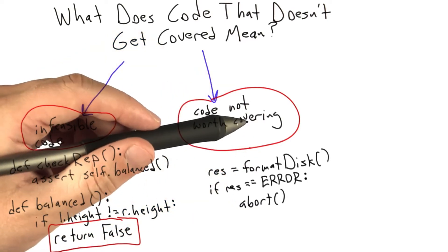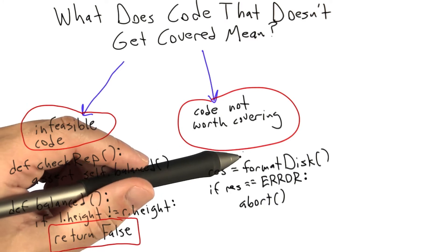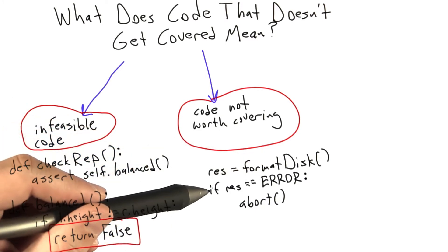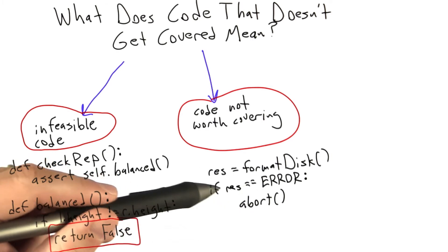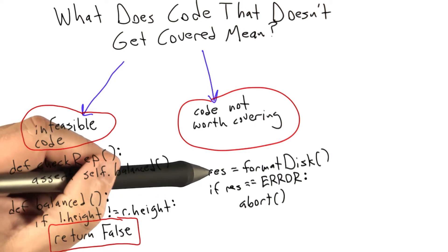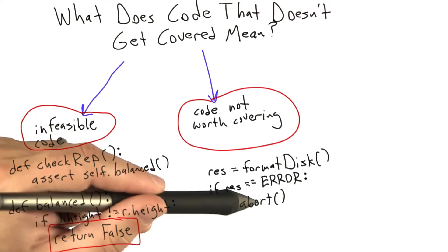What might be the case is that we lack an appropriate fault injection tool that will let us easily simulate the failure of a format disk call. Furthermore, the response of the code in this case is to simply abort the execution of the program. If those two things are the case, then we might be perfectly happy not to test this code branch.